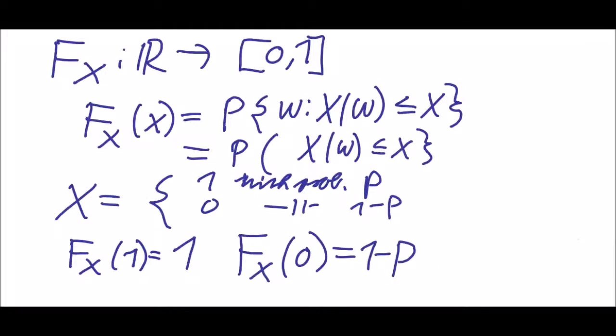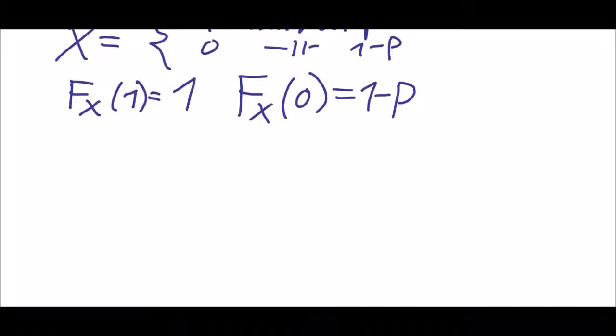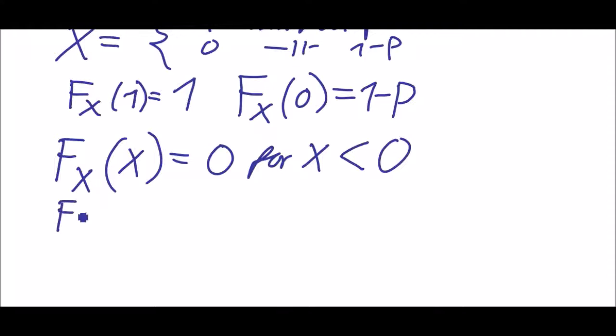What are the other values? F of x is 0 for x less than 0, and F_X of x is 1 minus p for x between 0 and 1.